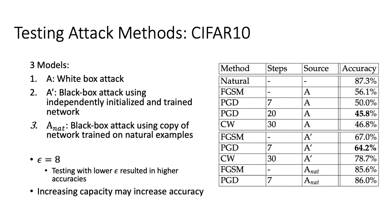For CIFAR-10, A is a white box attack, B is a black box attack using an independently initialized and trained network, and ANAT is a black box attack using a copy of the network trained on natural examples. Epsilon is 8 and testing with lower epsilons resulted in higher accuracies. The model performed worse on the CIFAR dataset, but we see that PGD with the most steps is still the most successful adversary. For ANAT, FGSM is the most successful adversary.